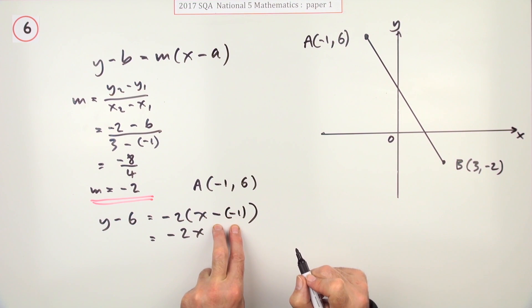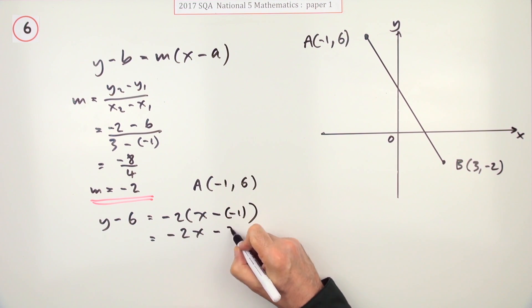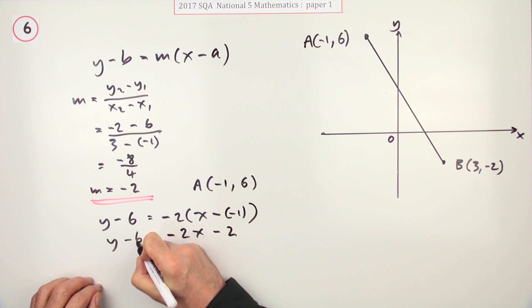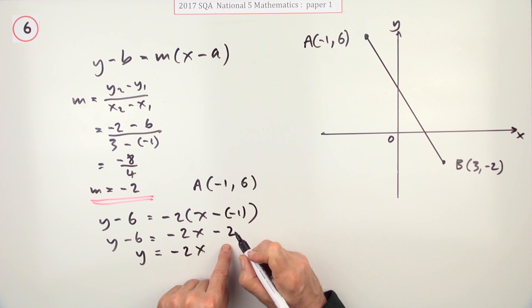Now that's a plus 1, so when you multiply it by a negative 2, it's going to end up with a negative 2. And lastly, take this 6 across and add it, so you've got y equals negative 2x, but that'll be negative 2x minus 2 plus 6, which will be plus 4.